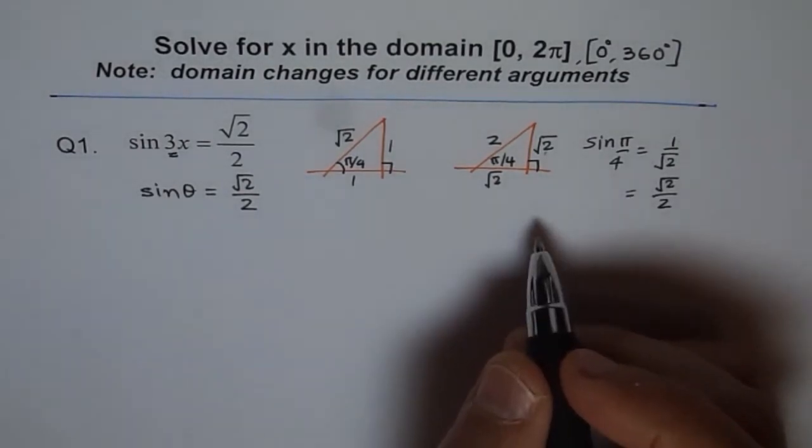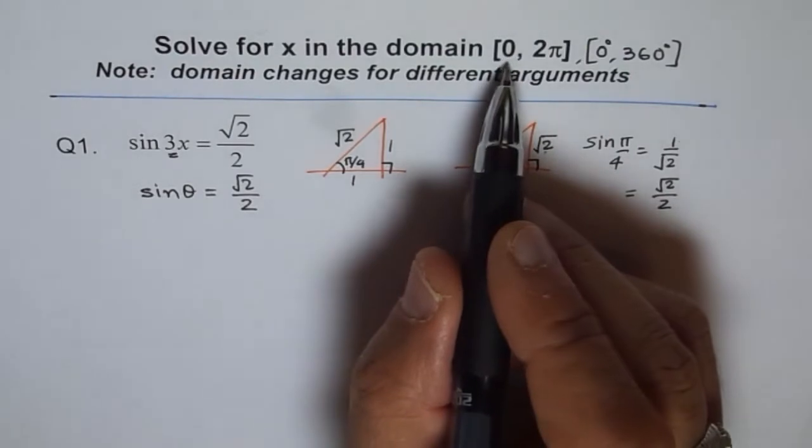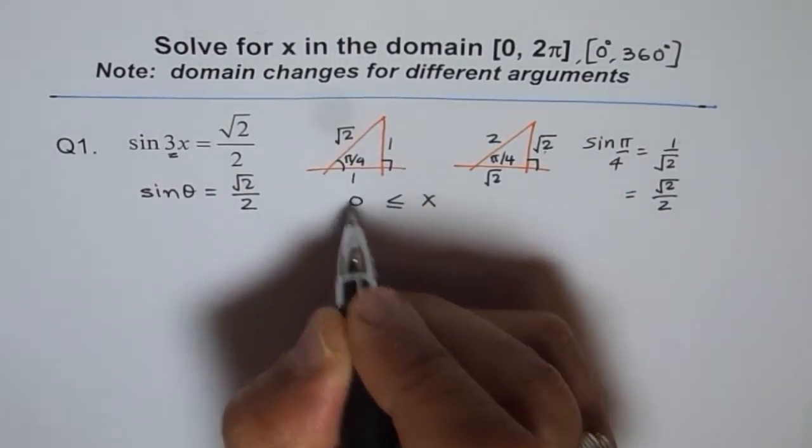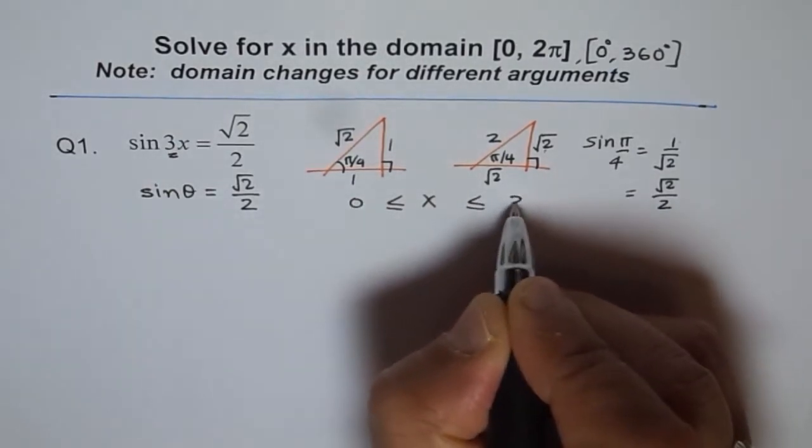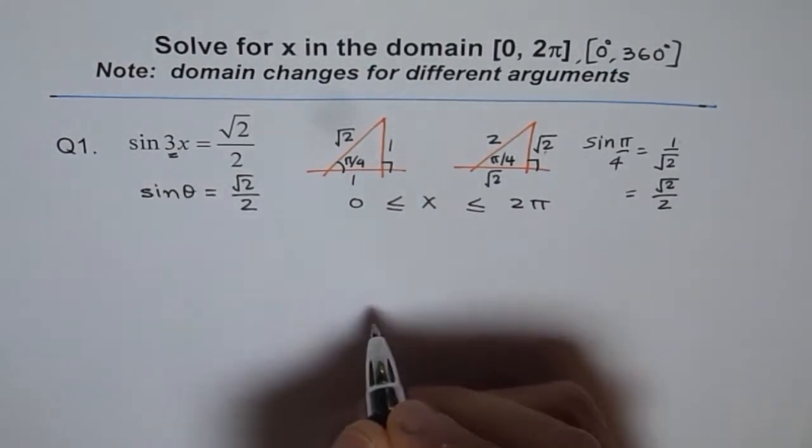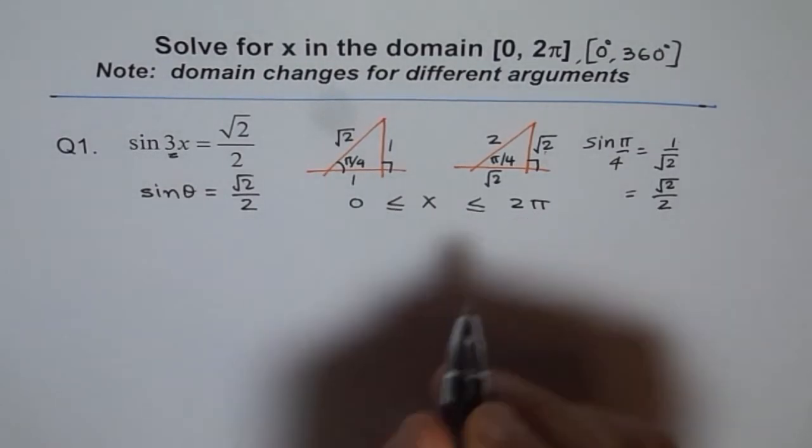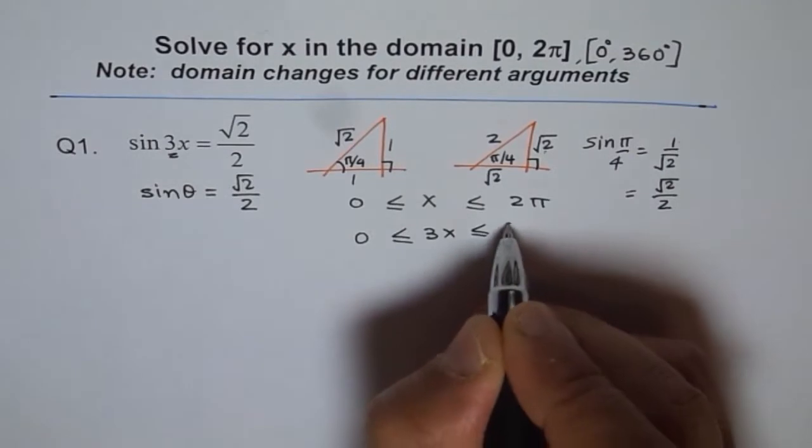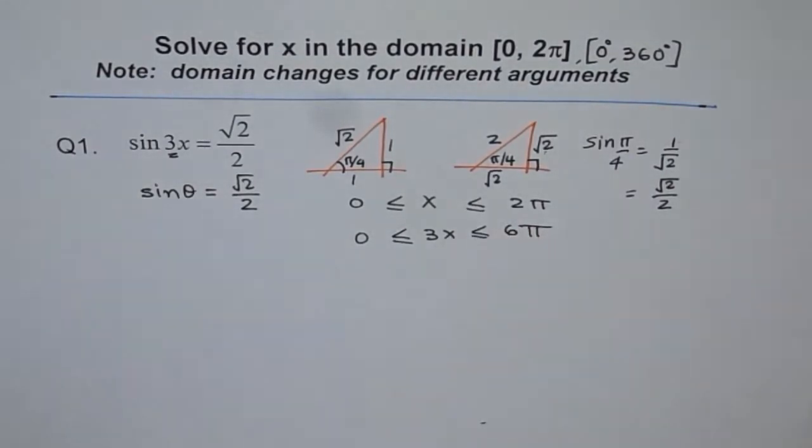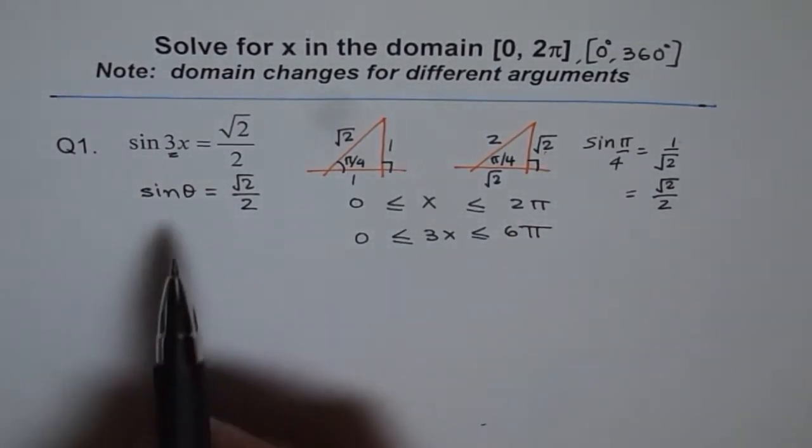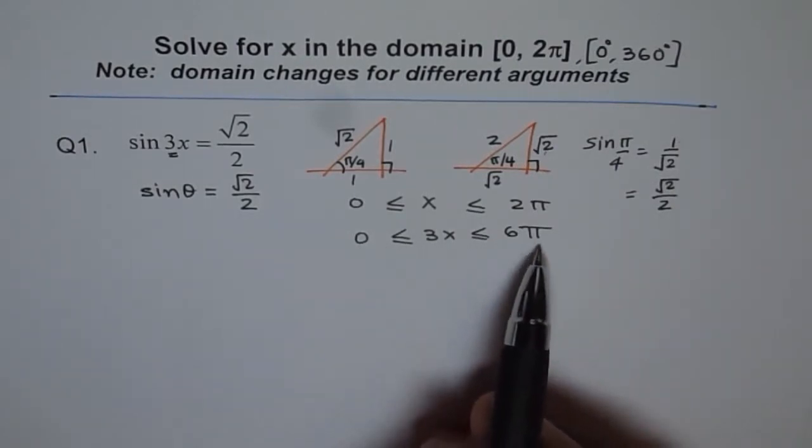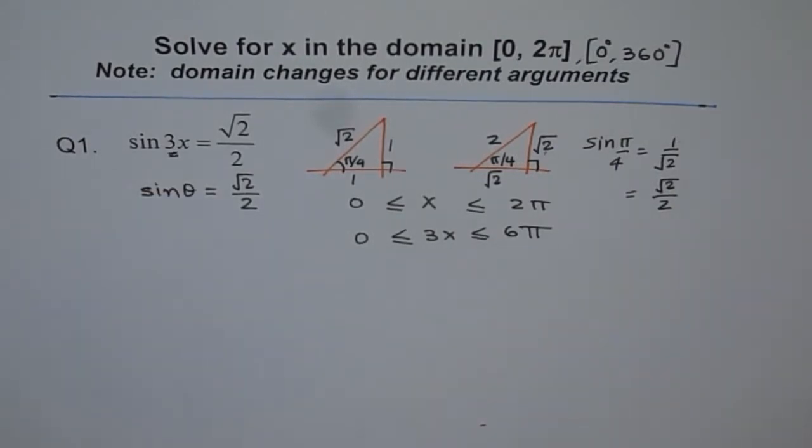We have domain and this domain is for x. We say, well, x is greater than or equal to 0 and less than or equal to 2π. How about 3x? Let me multiply by 3 and then we get, well, for 3x, it should be 6π, 3 times 2. That means for angle theta, we are actually looking for 0 to 6π where theta is 3x. Do you see that?